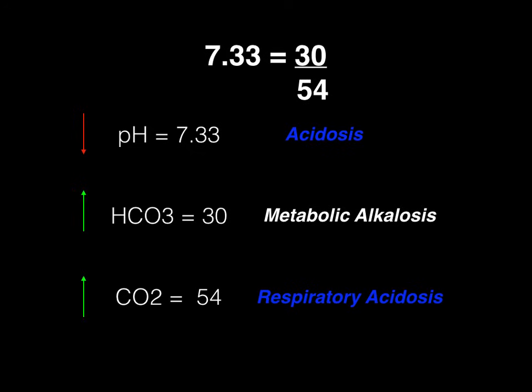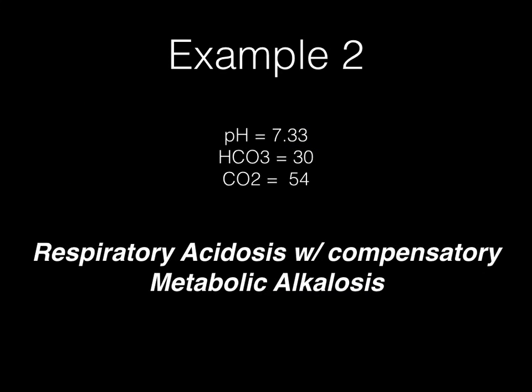Does that make sense? Respiratory acidosis means carbon dioxide is causing a decrease in pH, so the body uses the opposite system — the bicarb or metabolic side — to drive the pH back up. A metabolic alkalosis is the body's attempt to fix a respiratory acidosis. So we call this a respiratory acidosis with compensatory metabolic alkalosis. Try practicing a couple of these, drilling out values and seeing if you can do it on your own. It's very high yield for Step 1 to be able to crank this out in less than 25 seconds — it'll save you a ton of time on a question. Good luck out there.